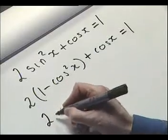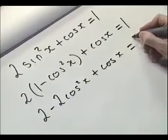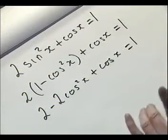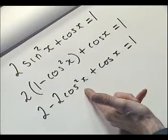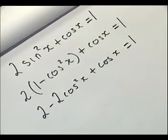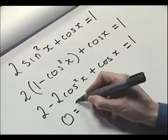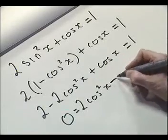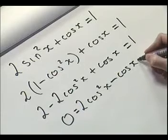From the identity, sin²x = 1 - cos²x. So substituting: 2(1 - cos²x) + cos x = 1. Multiplying out: 2 - 2cos²x + cos x = 1. Simplifying, we're going to end up with a quadratic equation where the variable is cos x. Moving the -2cos²x to the other side, we get 2cos²x - cos x - 1 = 0.